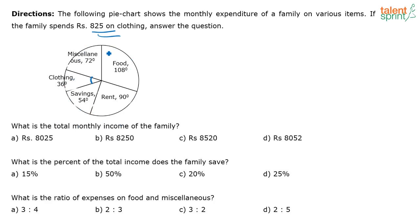The full monthly expenditure accounts to 360 degrees. Out of this 360 degrees, 36 degrees is clothing. So 36 by 360 into the total expenditure equals 825. This is 10%, so what is the total expenditure? 825 into 10 or 8250. That is option B. 36 degrees out of 360 degrees, or that is 10 percentage. 10 percentage represents 825, so the full expenditure is 8250. Correct answer is option B.